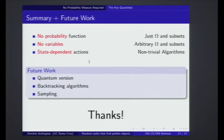I will talk about the proof tomorrow. The main point is: you don't have a probability measure anymore — you just have a base set, which is arbitrary, and arbitrary subsets of it. You don't have to have a decomposition into variables. And the actions that you can take in a particular state can depend on the state.